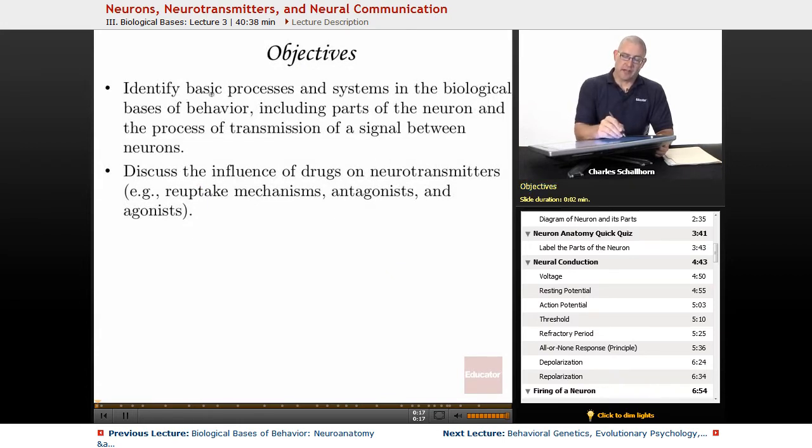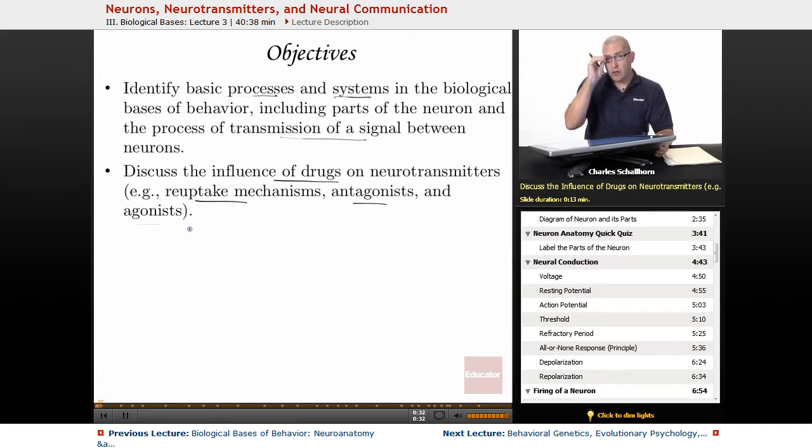Objectives: Identify the basic processes and systems in all the biological bases of behavior, including the neuron and the transmission of a signal, and also taking a look at drugs on neurotransmitters and their effects, including reuptake mechanisms, antagonists, and agonists. So from the College Board catalog of this course, this is what we're going to be looking at in this segment.